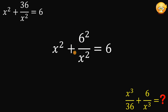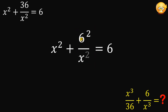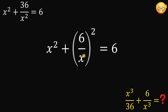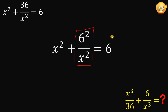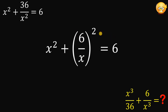Now, 6 squared over x squared can be simplified into 6 over x, raised to the power of 2. This is just the same thing as 6 squared over x squared. So now let's work with the form 6 over x raised to the power of 2.